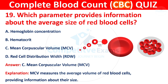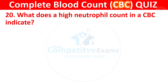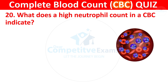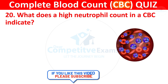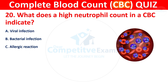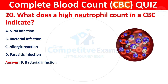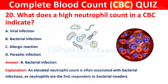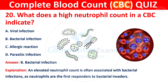Question 20: What does a high neutrophil count in a CBC indicate? The options are viral infection, bacterial infection, allergic reaction, or parasitic infection. The correct answer is B, bacterial infection. An elevated neutrophil count is often associated with bacterial infections, as neutrophils are the first responders to bacterial invaders.